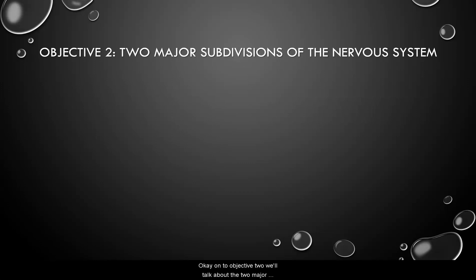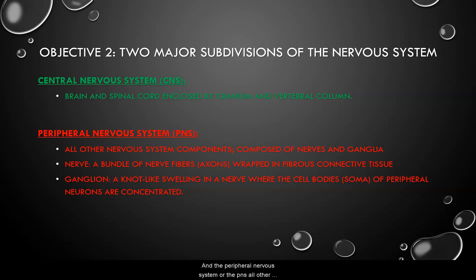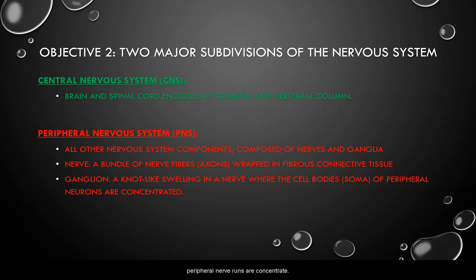On to objective two: the two major subdivisions of the nervous system. The central nervous system comprises the brain and the spinal cord, enclosed in the cranium and the vertebral column respectively. The peripheral nervous system, or PNS, includes all other nervous system components aside from the brain and spinal cord, and is composed of nerves and ganglia. A nerve is a bundle of nerve fibers or axons wrapped in fibrous connective tissue. A ganglion is a knot-like swelling in a nerve where the cell bodies, or soma, of peripheral neurons are concentrated.